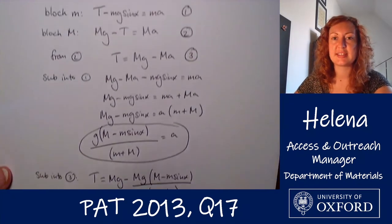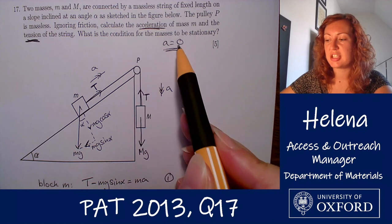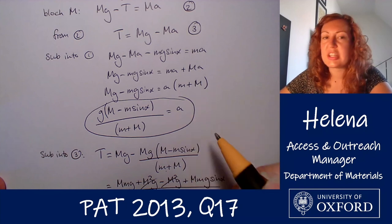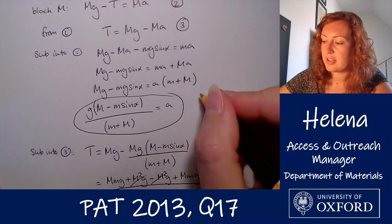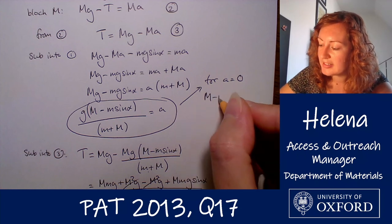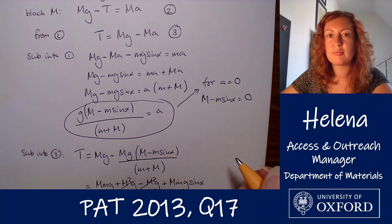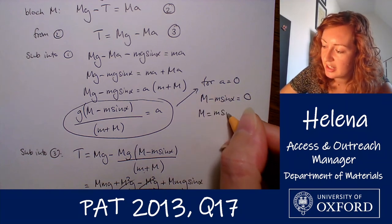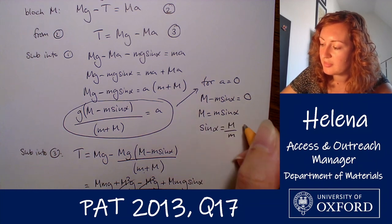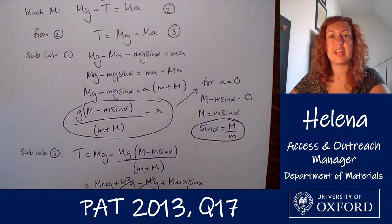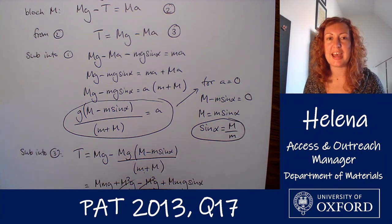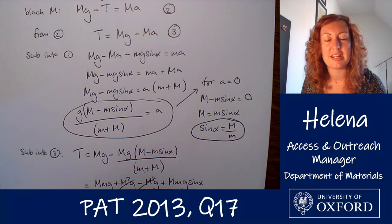The final part asks for the condition for the masses to be stationary, i.e. for a to equal zero. Looking at our expression for a, for it to be zero we need the numerator to equal zero: M minus m sin alpha equals zero. Rearranging, we get M equals m sin alpha, or equivalently sin alpha equals M over m. That is the condition for the acceleration to be zero and the masses to be stationary. I hope that was useful and I hope you'll tune in again next week for another PAT Problems video.